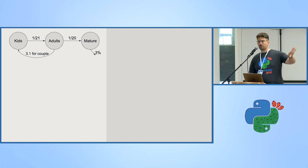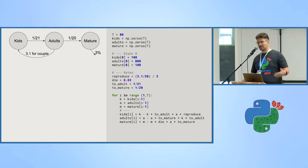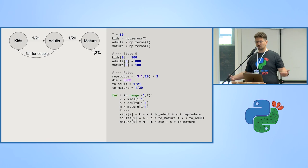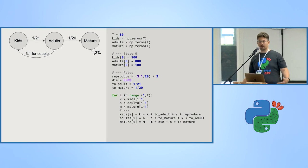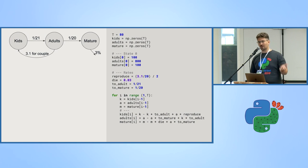A dynamic model basically looks like this: you have compartments — compartments of kids, adults, and the mature population — and you start with a state zero. So you say you count those people: 100 kids, 800 adults, 100 mature people. Adults reproduce — in Israel specifically each family has an average of 3.1 kids, divided by two per person. Kids after 21 years become adults, and after another 20 they become mature. The mature population, sadly, has the less desirable attribute of dying — about 3% of those older than 41 die each year.